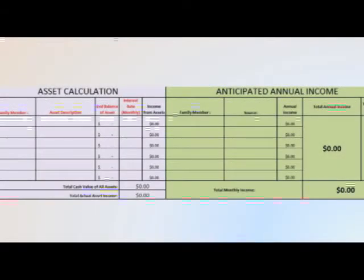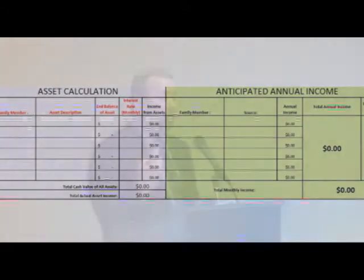The middle third of this form has a green section that summarizes all of the income information, and also a gray section that allows you to list the assets of the borrower or co-borrower. Remember, we're only interested in documenting the assets of the borrower or co-borrower, not any other household members.